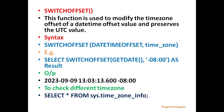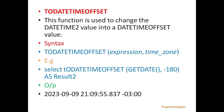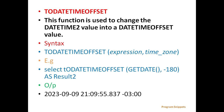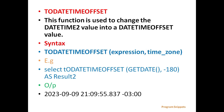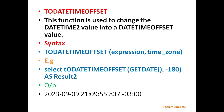To check different timezones, use the command select star from sys.timezoneinfo. Next is toDateTimeOffset. This function is used to change the dateTime2 value into a dateTimeOffset value. The general syntax is toDateTimeOffset with parameters expression and timezone. For example, select toDateTimeOffset getDate with minus 180 will display the output datetime with the new timezone.